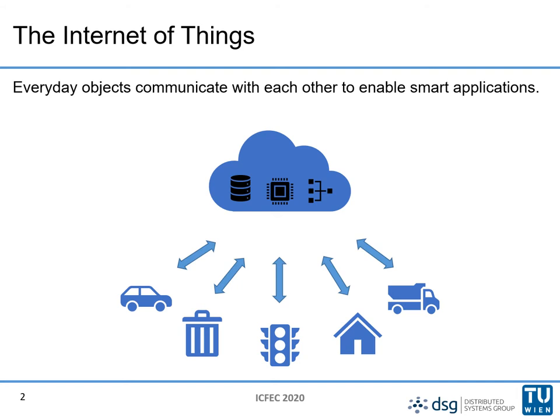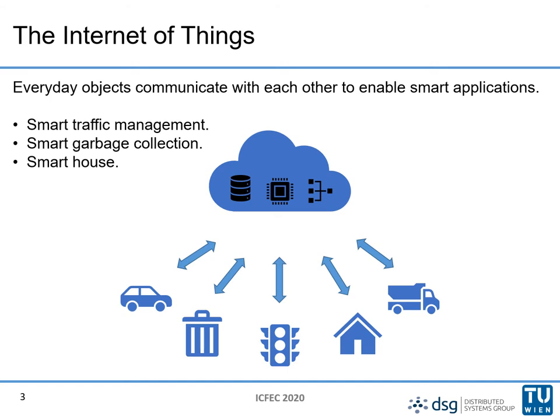Let's start with some background. In a typical Internet of Things scenario there are usually everyday objects that are able to communicate with each other through the cloud, and this communication is what enables smart applications. For example, by having traffic lights communicate with cars, it can lead to a smart traffic management system.